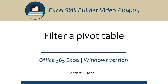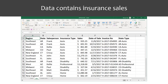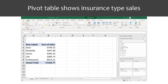In this video, I am going to walk through how to filter a pivot table in Excel. I am using Office 365 Excel on a computer running Windows. The screenshot here shows a data set of insurance sales records from a variety of states. Here is a pivot table from that data set that shows sales by category.